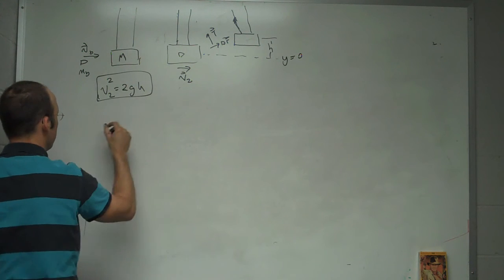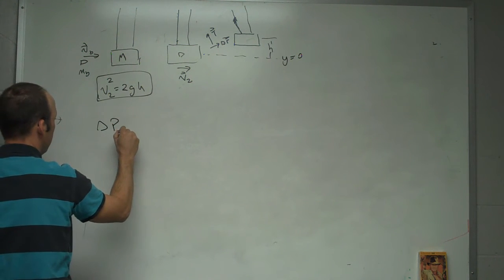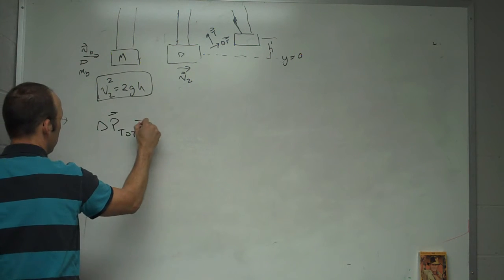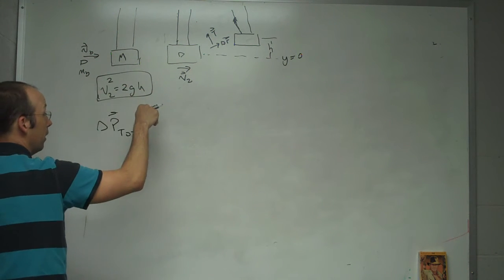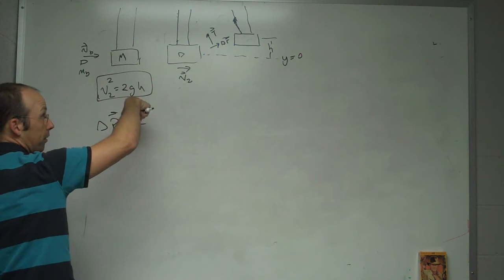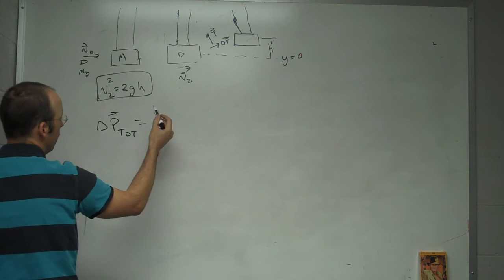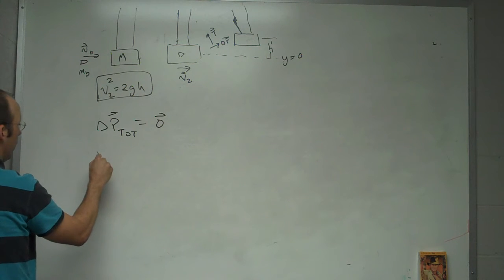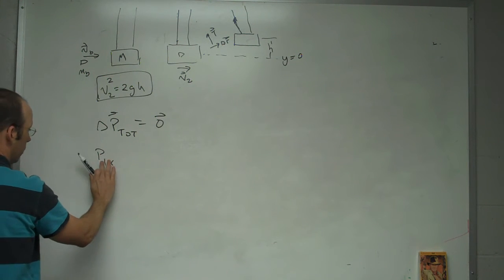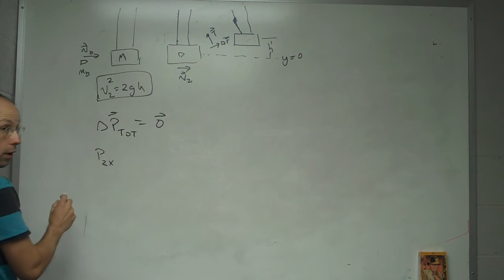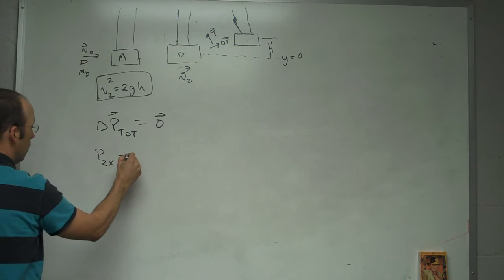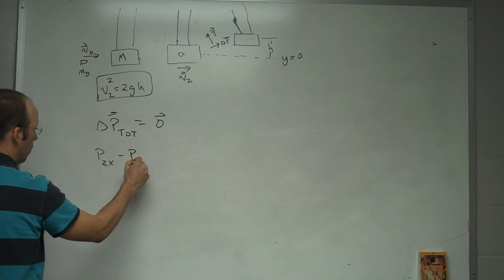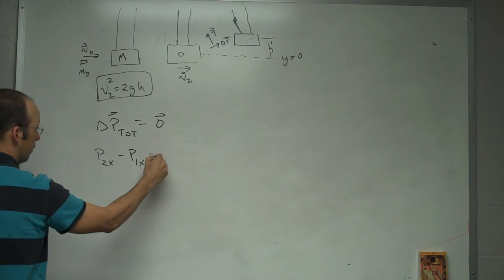So I can say, if this is my system, then I can say delta P total equals F net to the whole thing. Gravity is pulling down in it, but the string is pulling up. So it's going to be zero vector. So in the x direction, I can say P2x, the total initial momentum, minus P1x is zero.